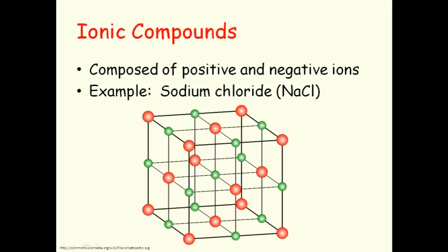Ionic compounds are composed of positive and negative ions. For example, sodium chloride is composed of sodium and chloride ions. They form a regular lattice pattern when a solid is produced.